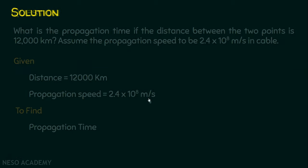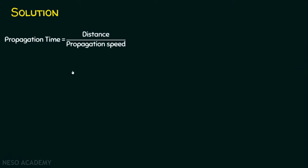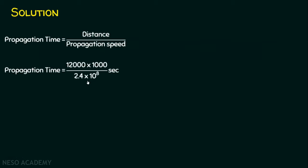Let's solve this problem. We know the propagation time or propagation delay is equal to distance divided by propagation speed. Let's use the given data. The distance is 12,000 × 1000, because we are converting 12,000 kilometers into meters, and the denominator is already in meters per second, so the final result will be in seconds.